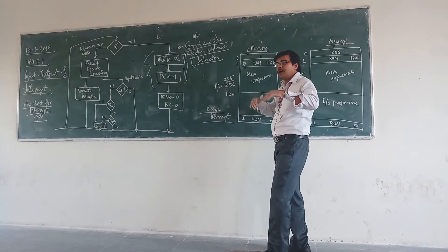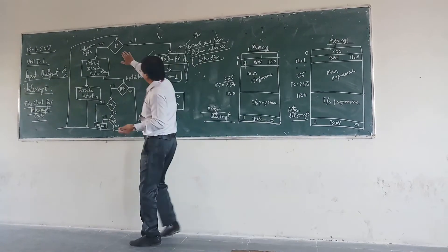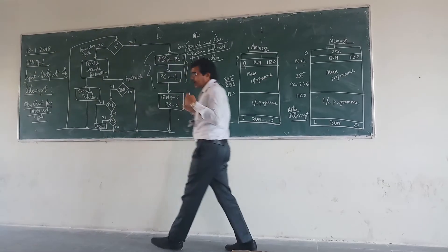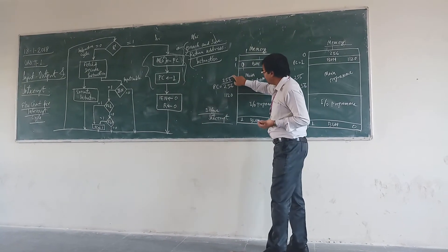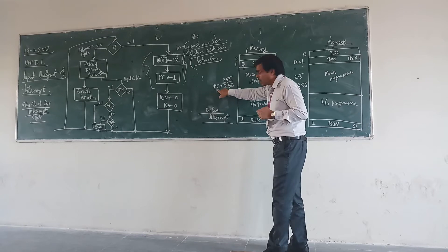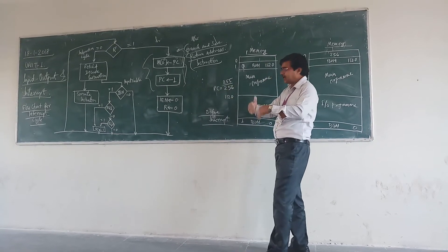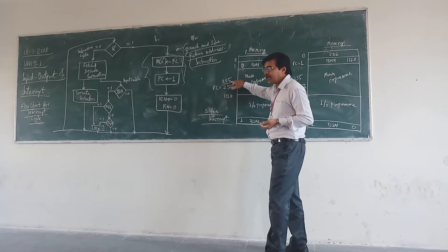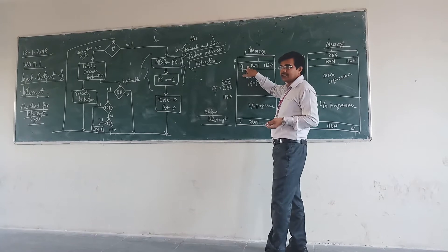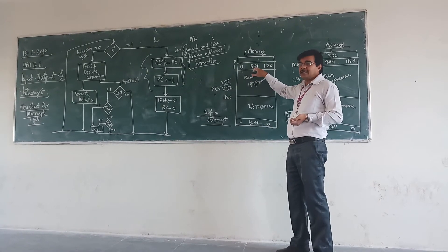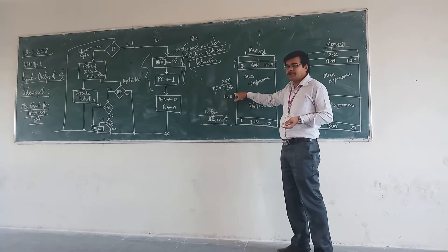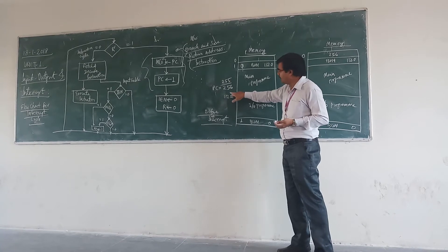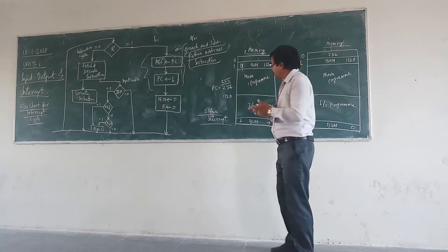At address 255, let us assume that the interrupt is set to 1. When the interrupt is set, the program counter automatically goes to this address and comes back to this unconditional branch, because the interrupt is already going on. So as you are having the interrupt at location 255, your program counter will store the memory location 256 — it is incremented by 1.